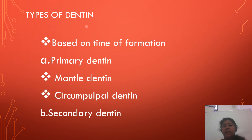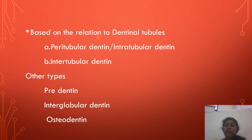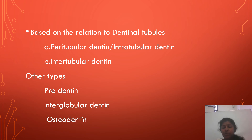Coming to the types of dentine. Dentine can be classified based on time of formation — that is primary dentine and secondary dentine. Primary dentine includes mantle dentine and circumpulpal dentine. Based on the stimulus that evokes dentine formation, it can be classified as physiological dentine (primary and secondary dentine) and tertiary or response dentine, which includes reactive dentine, reparative dentine, and sclerotic dentine. Based on relation to dentinal tubules, dentine can be classified as peritubular or intratubular dentine and intertubular dentine. Other types include predentine, interglobular dentine, and osteodentine.